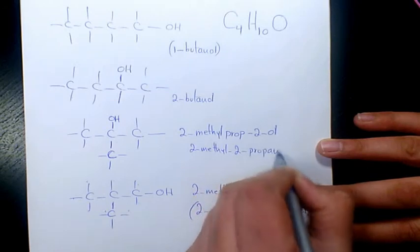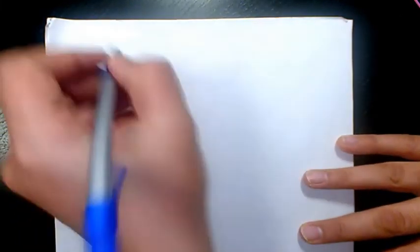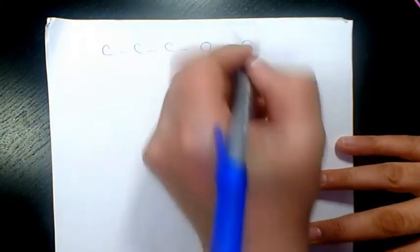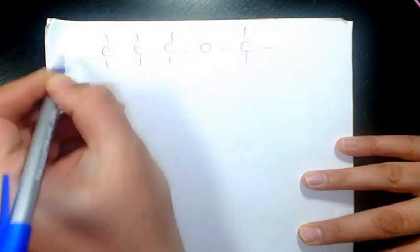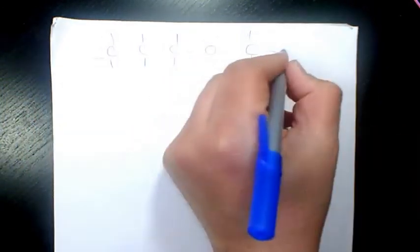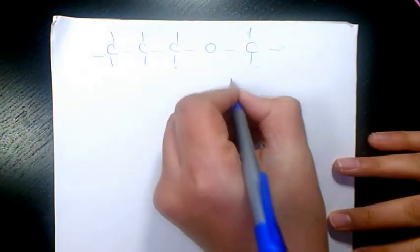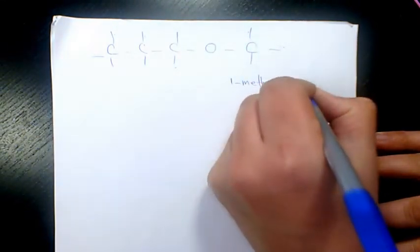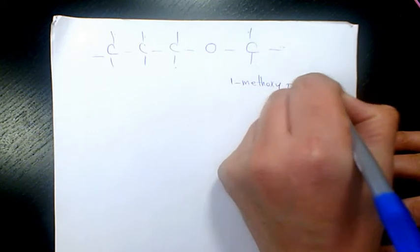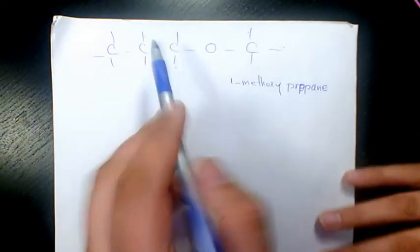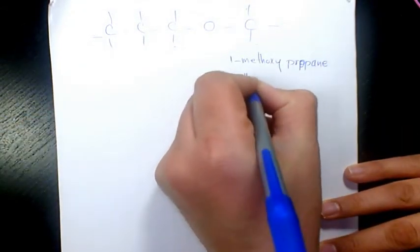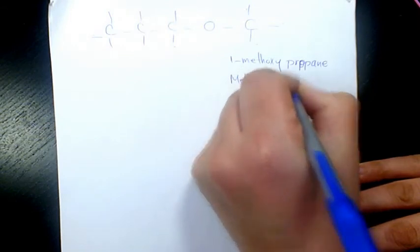Now, next one we have, we can use ethers now. 1, 2, 3, 0, 4. So 3 here, 1 in this side: 1, 2, 3, 4, 5, 6, 7, 8, 9, 10. So that's called 1-methoxypropane, because we have three carbons in here. Or we can call it methylpropyl ether. That's commonly used.